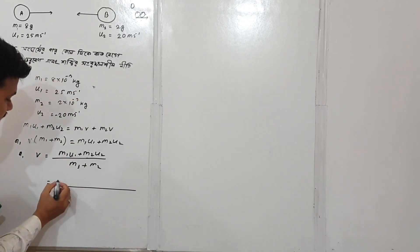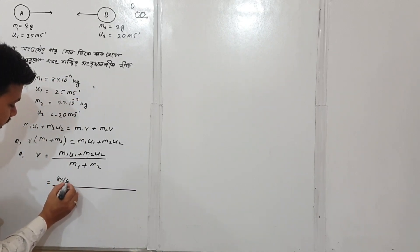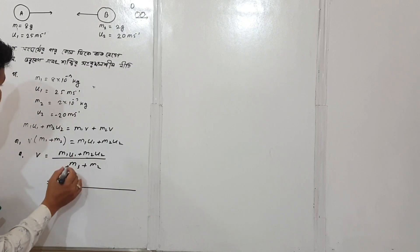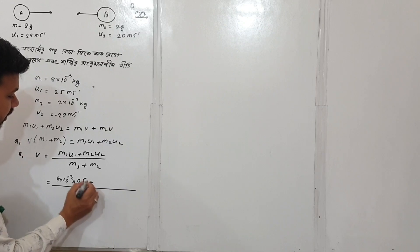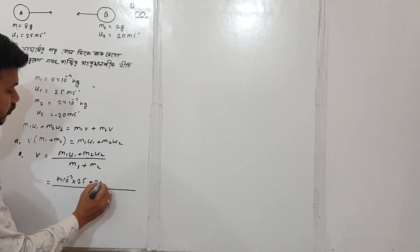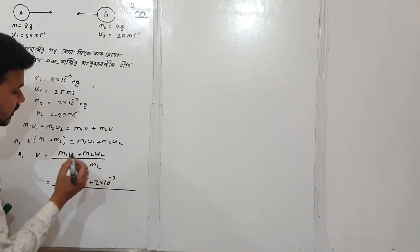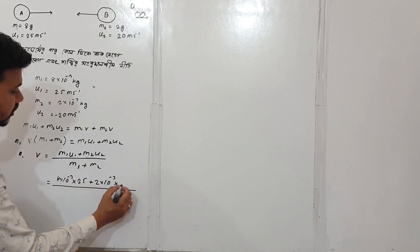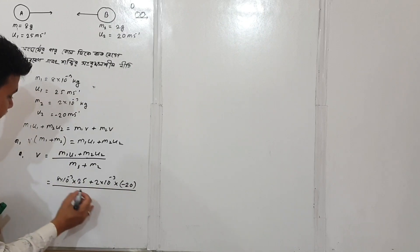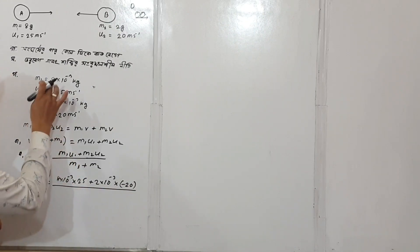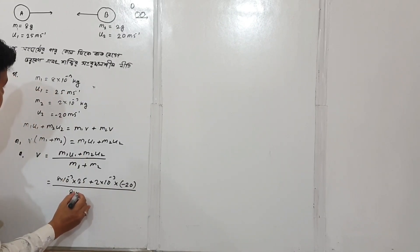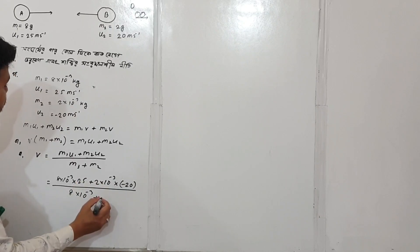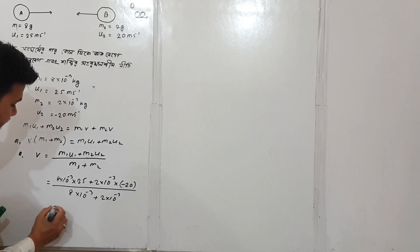Using mathematics, we can write m1u1 plus m2u2. Substituting: m1 = 8 × 10⁻³ into u1, plus m2 = 2 × 10⁻³ into u2, to carry out the calculation.